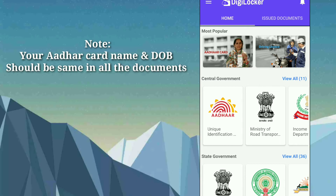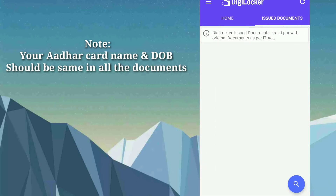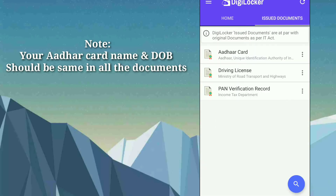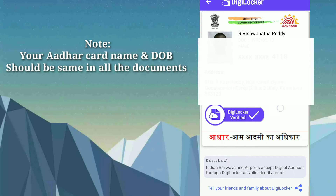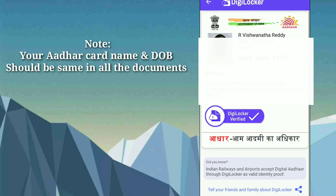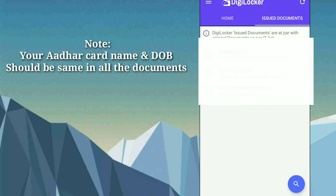If you want your documents, just click on Issued Documents. As you can see, I have my Aadhaar card, driving license, and PAN card listed here. Just click on any of them. As you can see, I got my Aadhaar card and it is verified by DigiLocker. You can get all your documents from here.